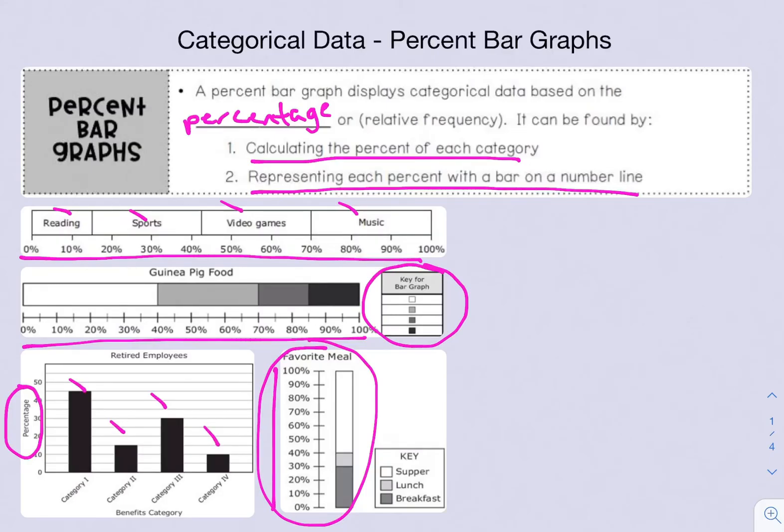But one thing that you really have to remember is these all represent percentages, not the number of students or the number of people. It has a percentage, so you have to calculate the percentage when using these.